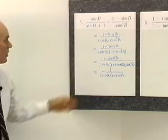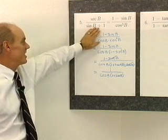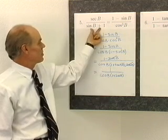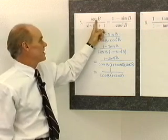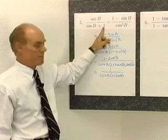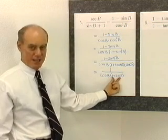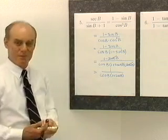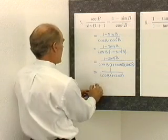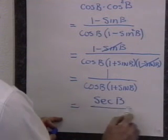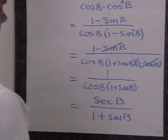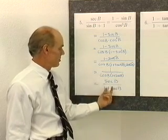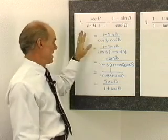Looking back to the left-hand side, I've simplified the right side to 1 over cosine b times (1 plus sine b). The left side has secant b in the numerator and sine b plus 1 in the denominator. I have 1 plus sine b in the denominator — that's the same as sine b plus 1. And 1 over cosine b is secant b. So I've finished this problem: secant b divided by (1 plus sine b), which matches the left-hand side.